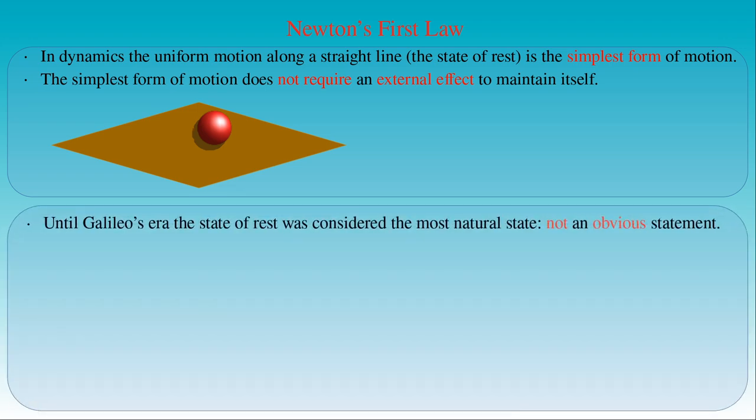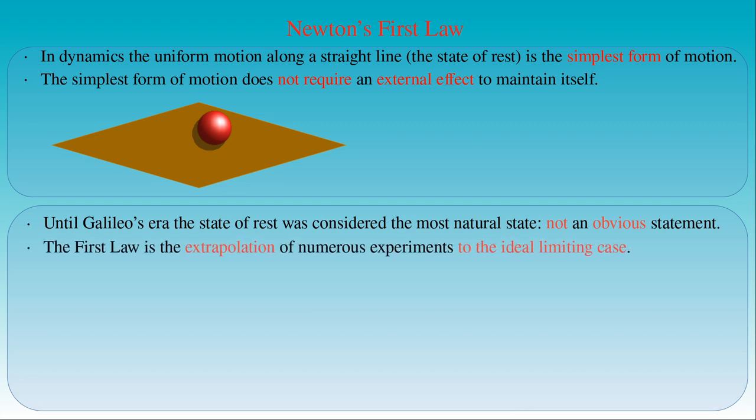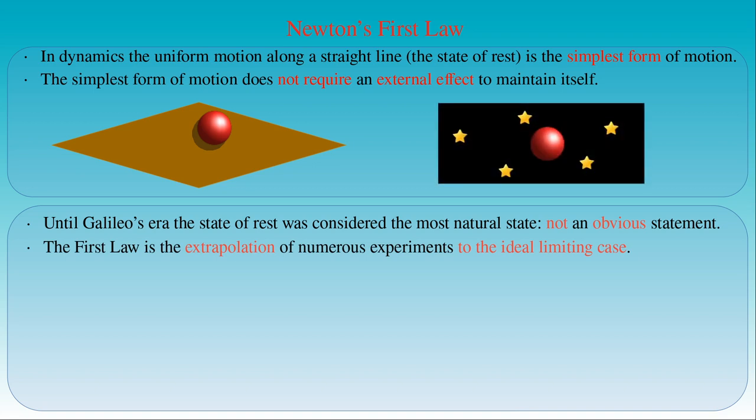The view that the state of rest is the most natural state of objects in nature, as opposed to uniform linear motion, prevailed in science from Aristotelian physics till Galileo's era. This demonstrates that Newton's first law is not an obvious statement. We also have to keep in mind that the first law of motion is the extrapolation of countless experimental results to the ideal limiting case, where a body is completely free from effects of other objects. This statement is an axiom — the first law cannot be proven with direct experiments, since no material object can be withdrawn from the effects of other bodies.